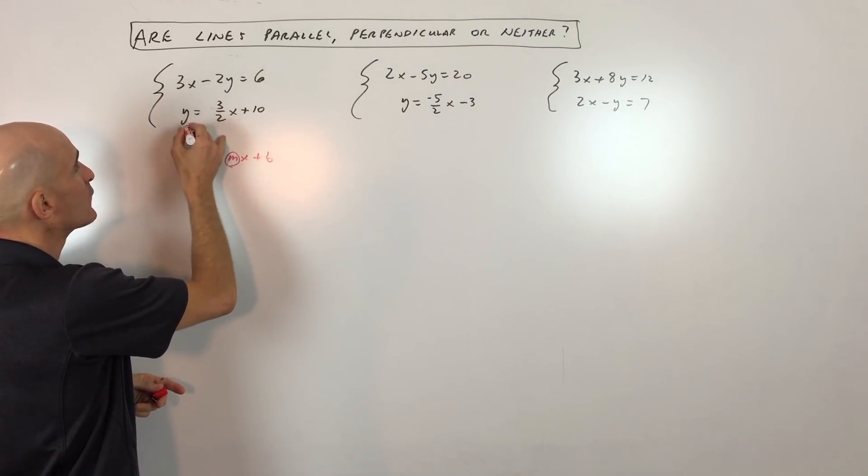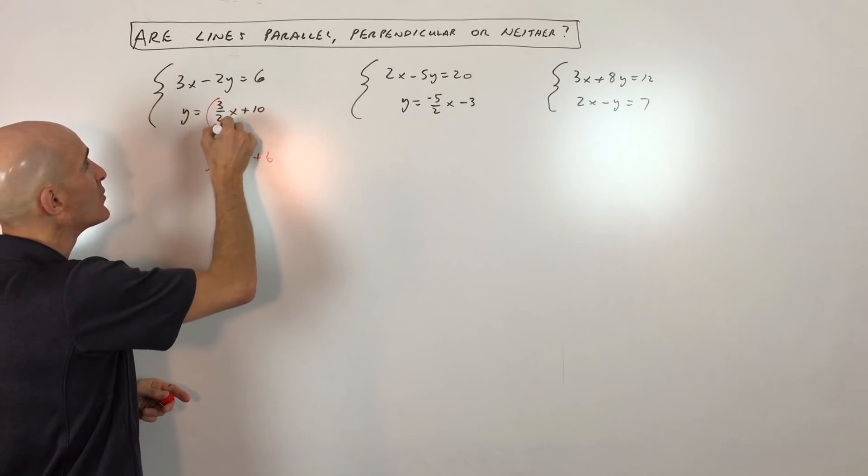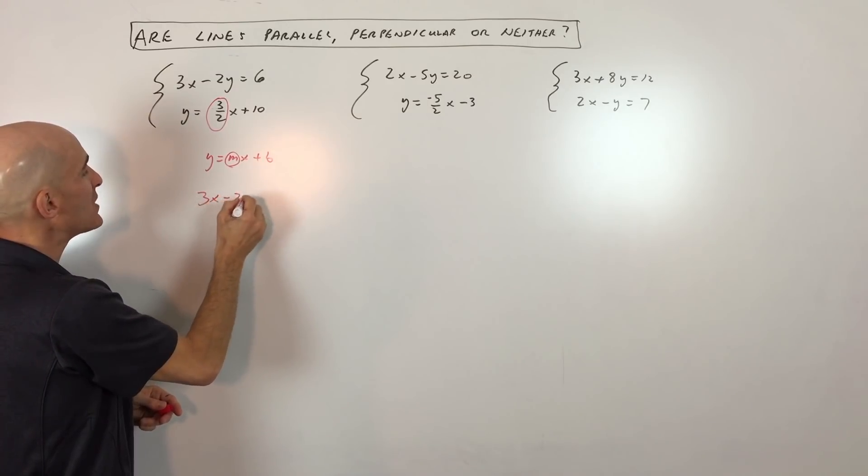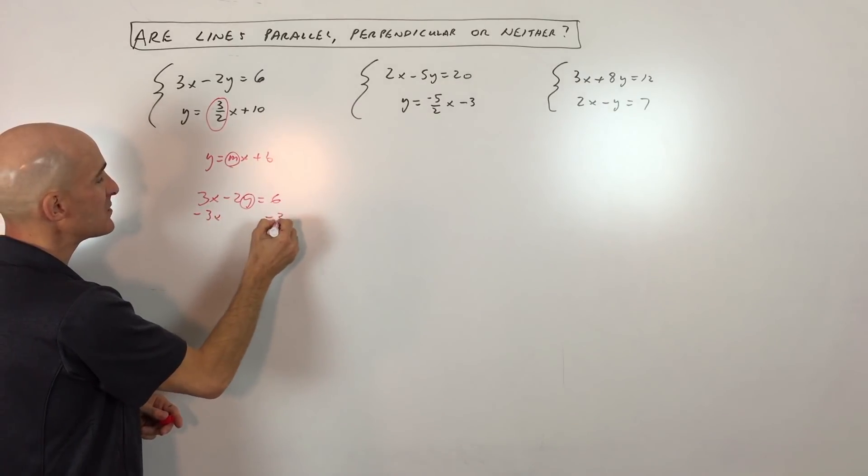This one's already in the y equals mx plus b form. You can see y is by itself, and we know the slope is 3 halves. This one here at the top, though, we want to rearrange it to solve for y. So we're going to subtract 3x from both sides of the equation.